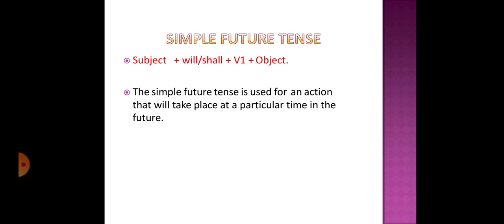We use shall and will to denote future time. 'Will' is used with the first person — that is 'I' and 'we' — to denote determination and willingness. 'Shall' is used with the first person to denote an offer, so when you are offering something, you use 'shall.'